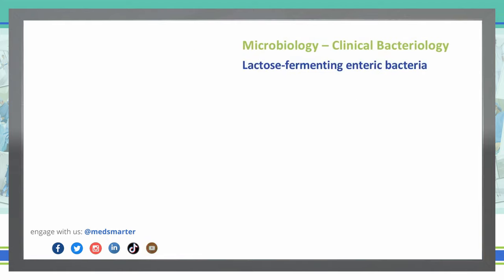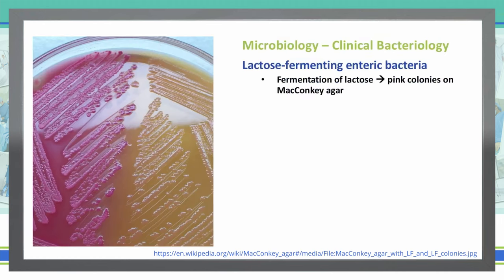Another gram-negative bacteria that we can talk about is a class in and of itself, and those are lactose-fermenting enteric bacteria. What does that mean that they are lactose-fermenting? Well, lactose is what helps them grow — they grow upon the fermentation of lactose. How we know that they do that is we use MacConkey's agar, and the MacConkey's agar will turn pink if there's a lactose fermenter on that particular agar plate.